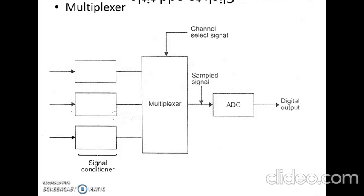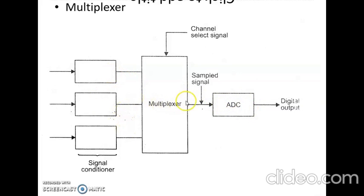Now let us discuss the multiplexer. A multiplexer is a circuit that accepts inputs from a number of sources and, by selecting an input channel, gives an output from just one of them. A multiplexer is used in multi-channel systems where multiple inputs are present. It allows multiple signals to pass through one by one so that each signal can be converted into digital form by the analog-to-digital converter sequentially. This avoids the need for multiple ADCs, making the system more economical.